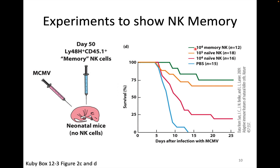If only 10,000 of the previously activated 'memory' NK cells were transferred in, we see an even better survival advantage. These memory cells are more active than naive cells. Comparing the green versus red lines — the same number of cells transferred — you can see that memory NK cells are quite a bit more active in eliminating the virus and protecting these mice.